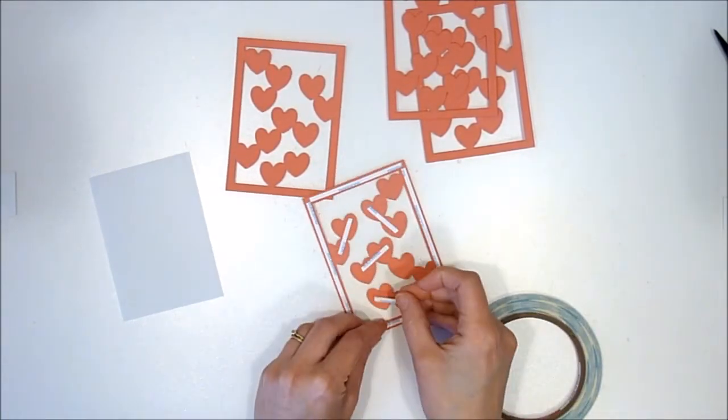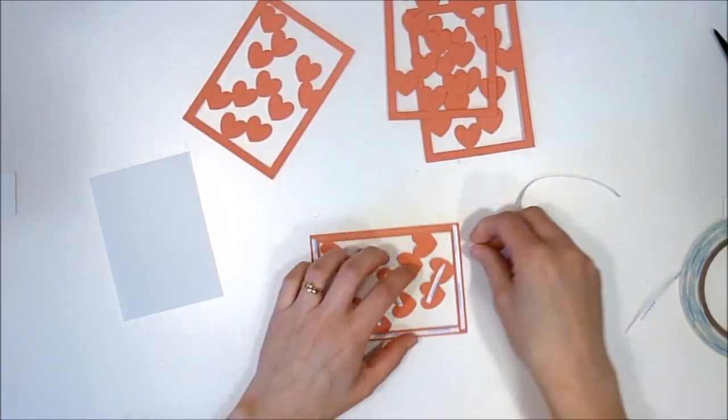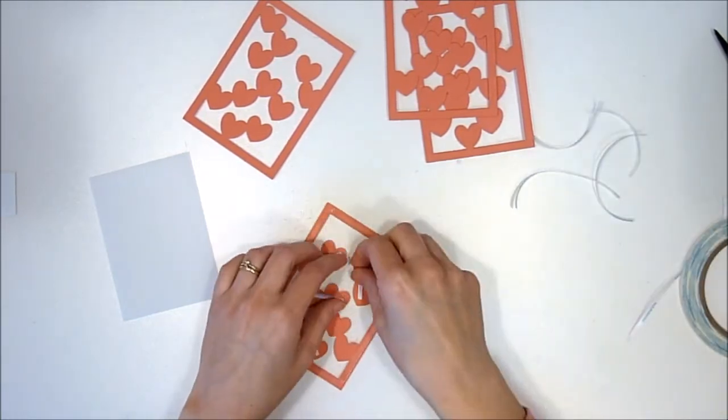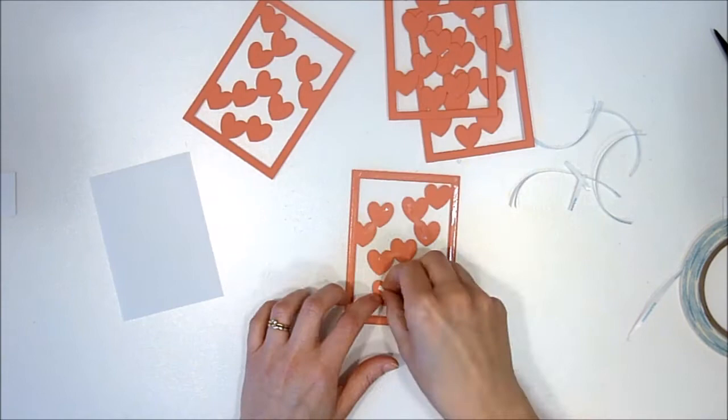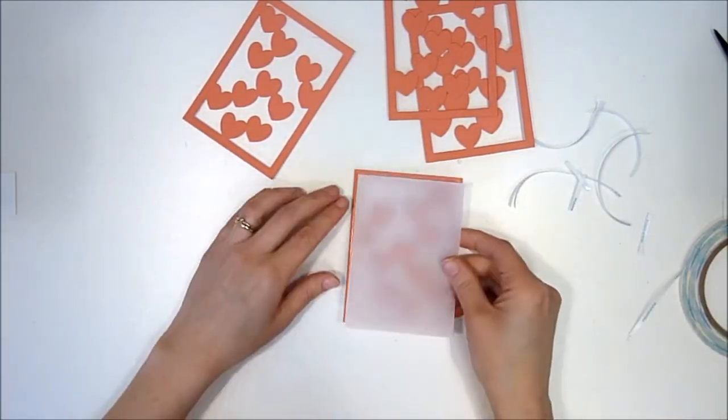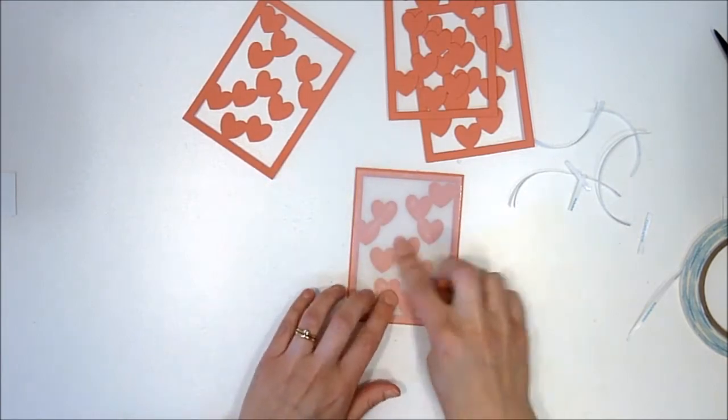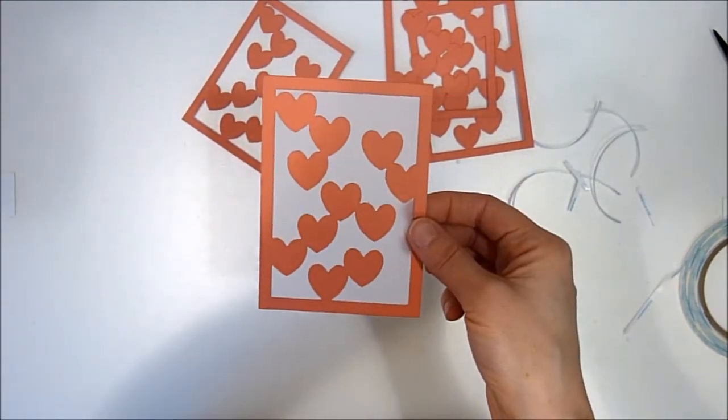This isn't a decoration you maybe necessarily keep for years and years, but at the same time it'd be nice for it to be able to last long enough to enjoy for at least a season or two. So I'm going to do that on all of the panels—vellum on each one. And then you can just see through the vellum, but not entirely.